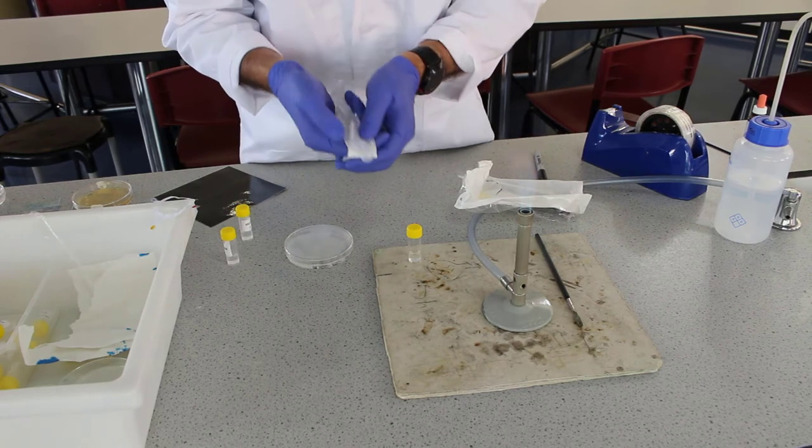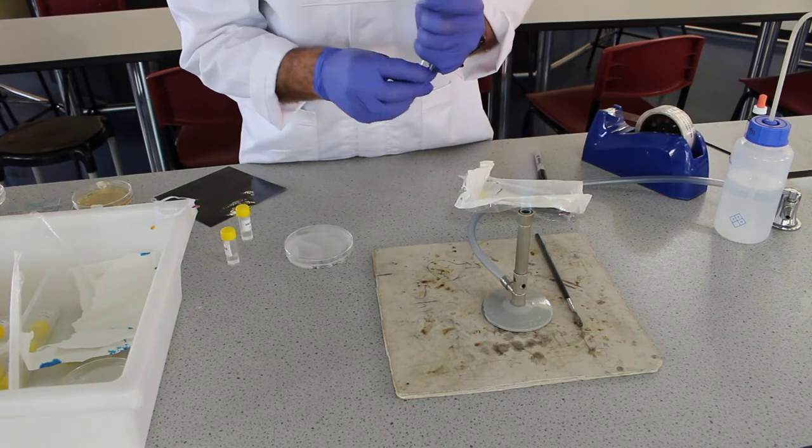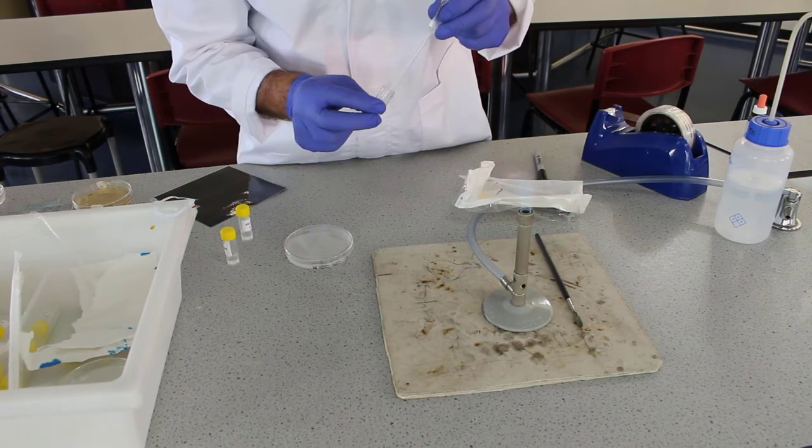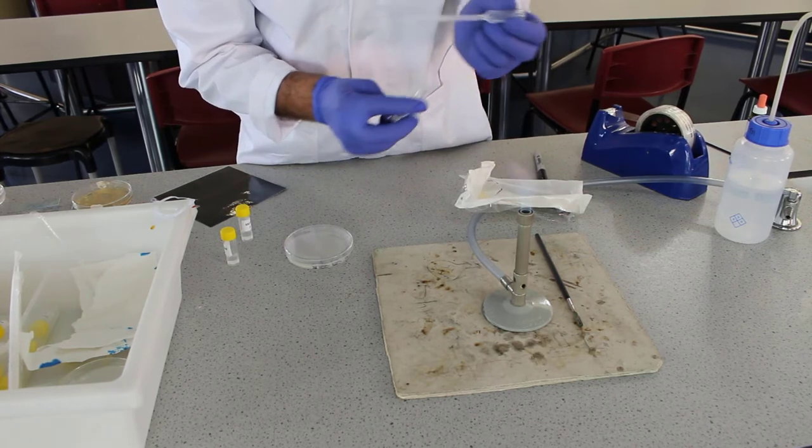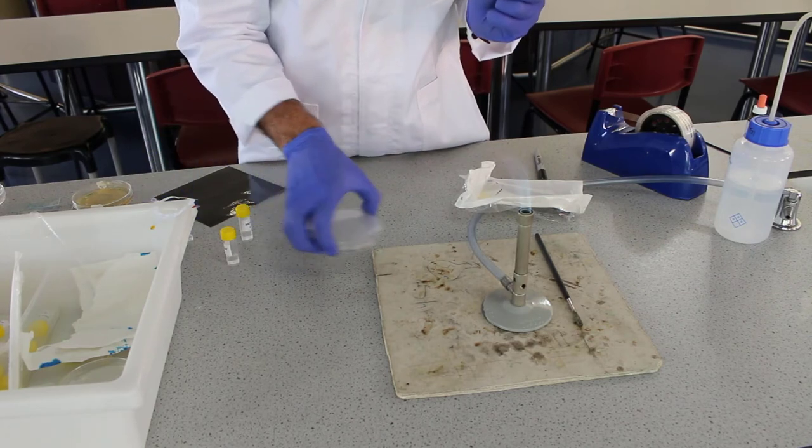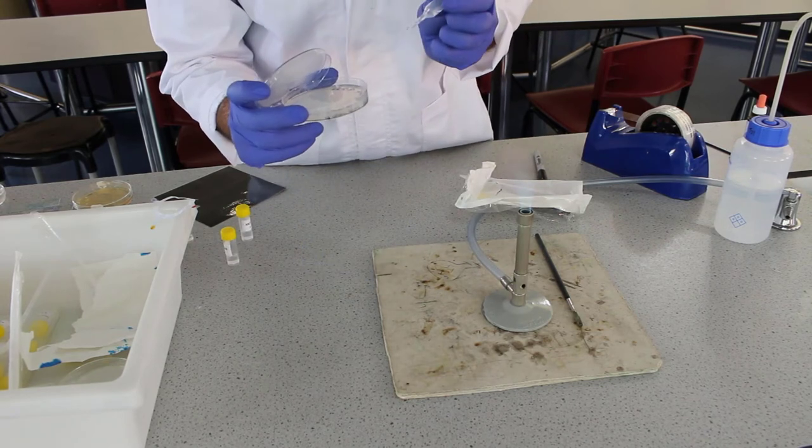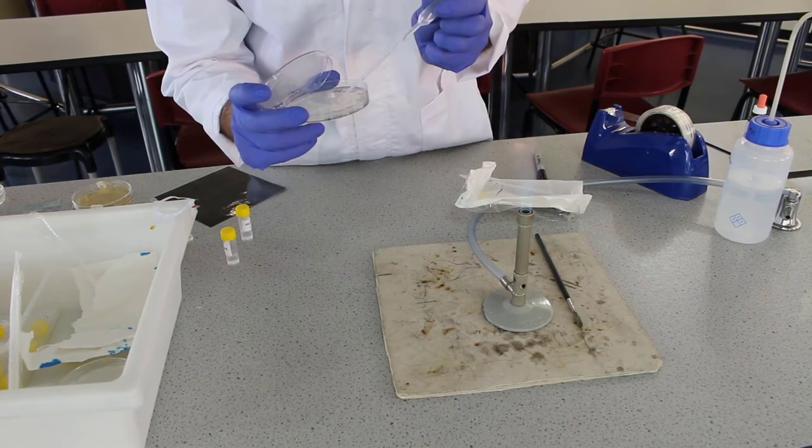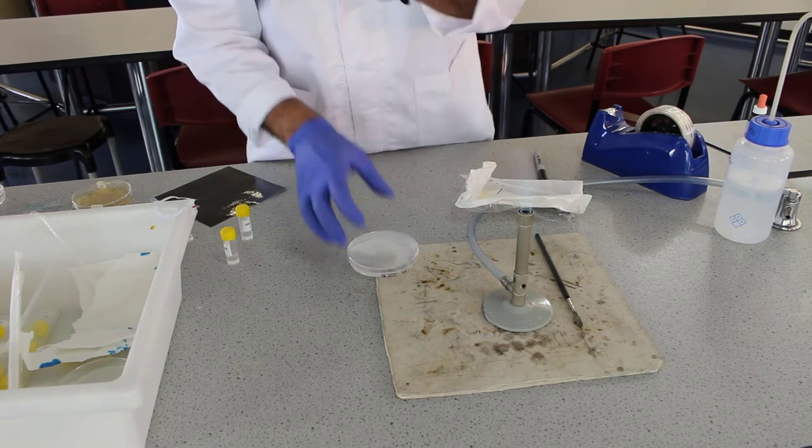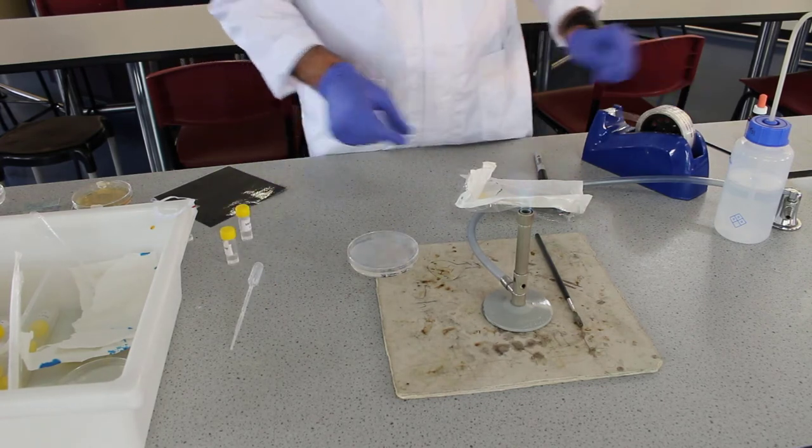Open up our sterile transfer pipette. Open up our vial. Remember to hold the lid of the vial. Take some of the inoculant up into the transfer pipette. It's just literally just a couple of drops on the plate. Not very much. It's very easy to put too much on. Everything that we've used will then be disposed of. Just set it aside for now.